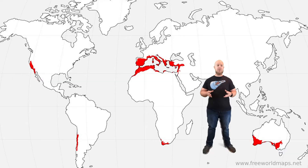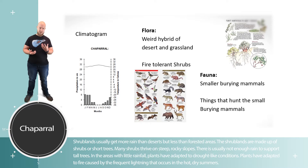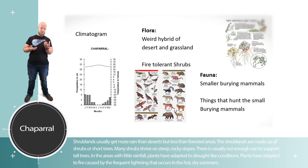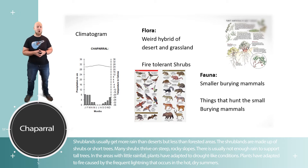The chaparral is a relatively geographically restricted biome, making it a very interesting and unique place to visit. Here in the Angeles Forest we see a brilliant example. The chaparral is a biome that gets less rain than forests but more rain than deserts, and you end up with a plant community that appears to be a weird hybrid of the most rain-tolerant desert plants and the most drought-tolerant grassland plants.